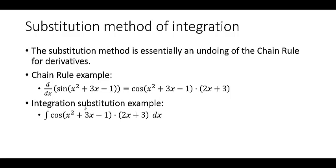Suppose I want to find an antiderivative of cosine of x squared plus 3x minus 1 times 2x plus 3 dx. Now, you should be able to look at our chain rule example and say I took this derivative here and I got an answer that's the thing we're trying to find the antiderivative of. So clearly our answer really should be sine of x squared plus 3x minus 1 and then with a plus c.